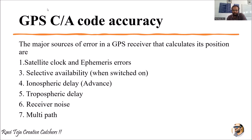The major sources of error in a GPS receiver that calculates its position are: first, satellite clock and ephemeris errors. With respect to the satellite clock, we have already seen atomic clocks. Ephemeris errors refer to data related to the whole satellite system — from the ground station we can monitor or alter data related to the satellite rotating in its orbital state. That data regarding the satellite with respect to the earth station is called ephemeris data.